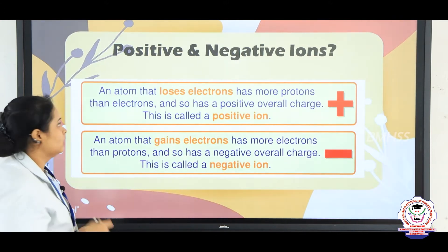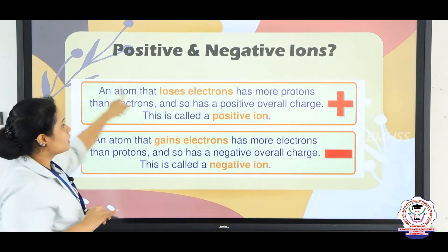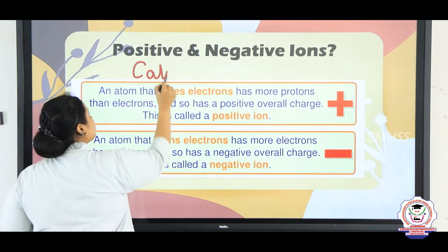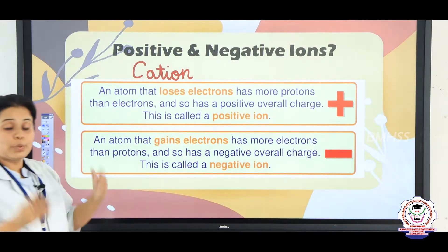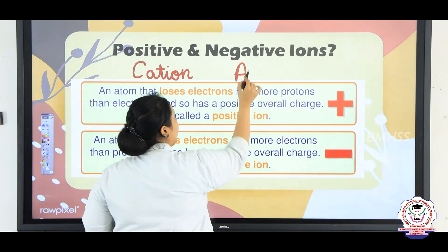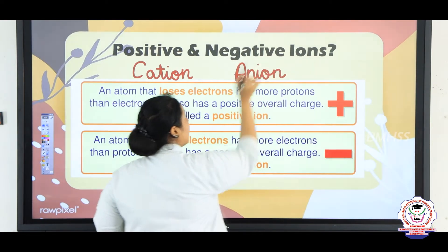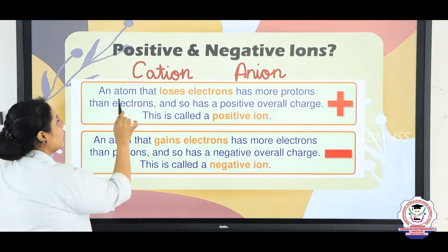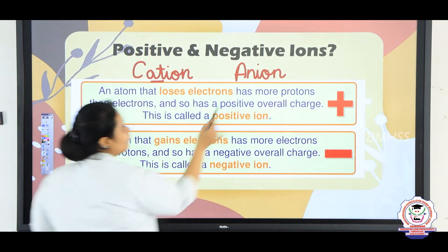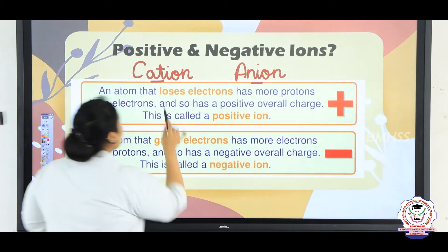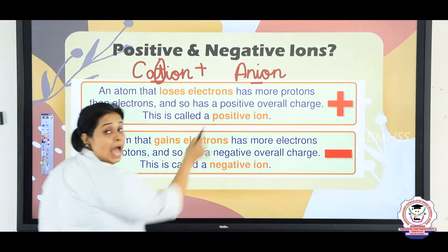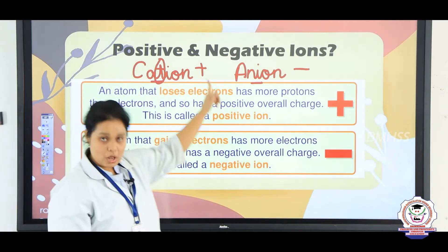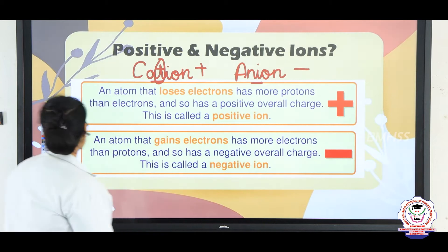There is a trick to understand this. The atom which loses an electron is known as a cation, and a substance which gains an electron is known as an anion. To remember the charges: in the spelling C-A-T, the third letter is T, and in anion it is I. T represents the plus symbol and anion represents the minus symbol. So cation is always positive charge and anion is negative charge.